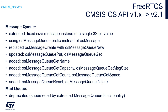There are also differences within the message queue between CMSIS-OS API version 1 and version 2. There is an extended fixed-size message instead of a single 32-bit value. Instead of OS message, the OS message queue prefix is used, the create function is replaced with new, and there is an update of OS message queue put and OS message queue get. A few functions have been added, and importantly, the mail queue has been removed and replaced by the message queue functionality.